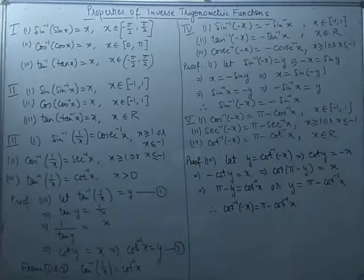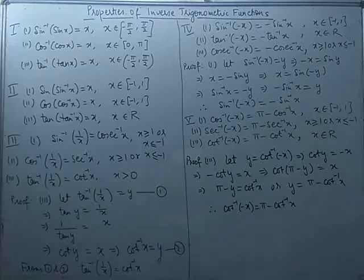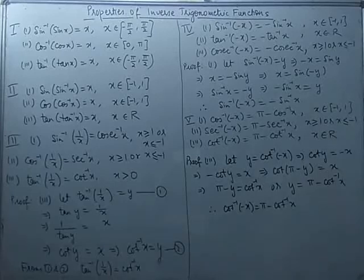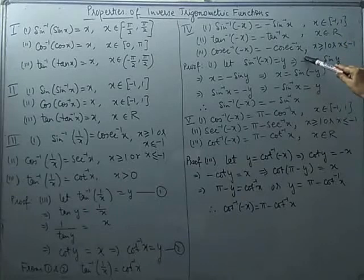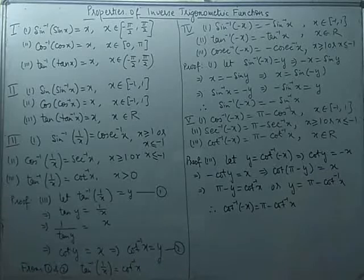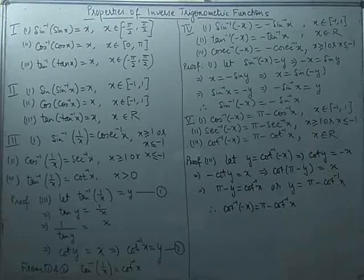Moving on to the fourth set: we know sin(-θ) = -sin θ, tan(-θ) = -tan θ, and cosec(-θ) = -cosec θ. You will find a similarity here: sin⁻¹(-x) = -sin⁻¹x, tan⁻¹(-x) = -tan⁻¹x, and cosec⁻¹(-x) = -cosec⁻¹x. Note that cot⁻¹(-x) has not been included here — we will see why shortly.